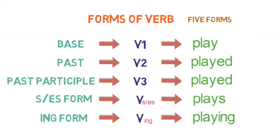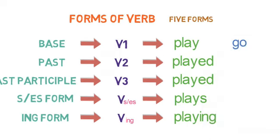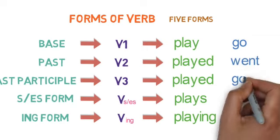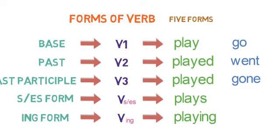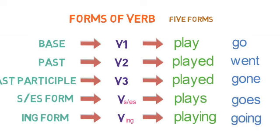Let's look into one more example: GO. In the base form is go. Past form, it is went. In the past participle form, it is gone. In the S/ES form, it is goes. And in the ING form, it is going. Now that you are clear with the verb forms, let's dive into the tenses.